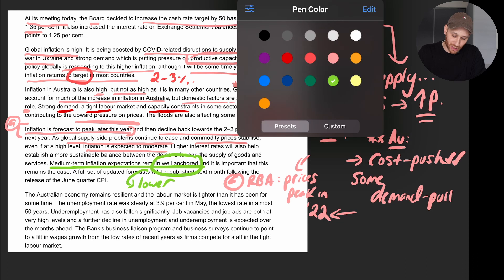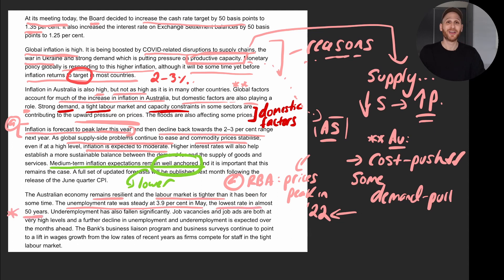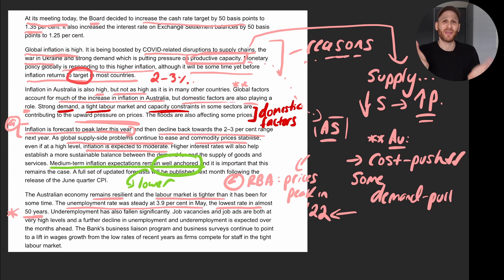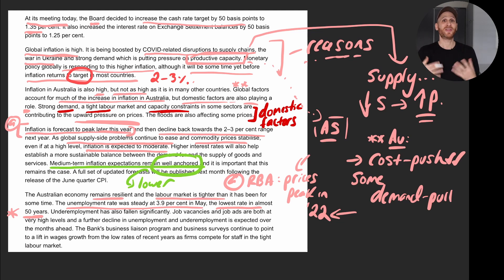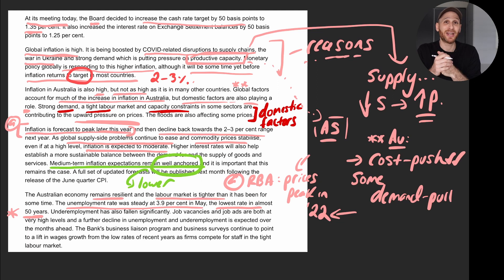The Australian economy remains resilient and the labour market is tighter than it has been for some time. The unemployment rate was steady at 3.9% in May — the lowest rate in almost 50 years. If unemployment is at its lowest level in 50 years, that's pushing upward pressure on wages, because firms are competing for workers and need to offer higher wages to retain or attract staff.